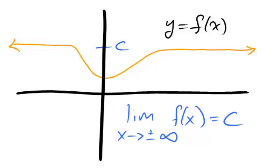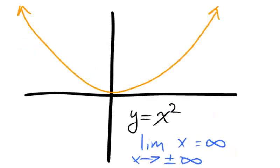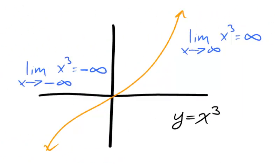Not all limits at infinity have to be 0. A function f can have a limit at positive or negative infinity equal to some constant c. Other functions have infinite limits at infinity, like polynomials. The limit as x approaches either positive or negative infinity for x squared is positive infinity, while the limit as x approaches infinity for x cubed is infinity and the limit as x approaches negative infinity for x cubed is negative infinity.